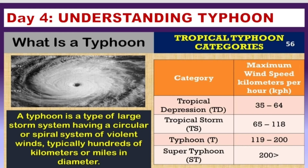These are the stages of a tropical cyclone by category. First, a tropical depression has wind speeds of 35 to 64 km/h. When speed increases, it becomes a tropical storm with 65 to 118 km/h maximum wind speed. If it reaches maximum wind speeds of around 200 km/h, it transforms into a super typhoon, which is the most powerful category.